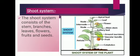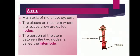Now let's move on to the shoot system. The shoot system consists of stem, branches, leaves, flowers, fruits and seeds. Stem is the main axis of the shoot system and it grows upward from the soil. The places on the stem where leaves grow are called nodes, and the portion of stem between two nodes is called internodes.